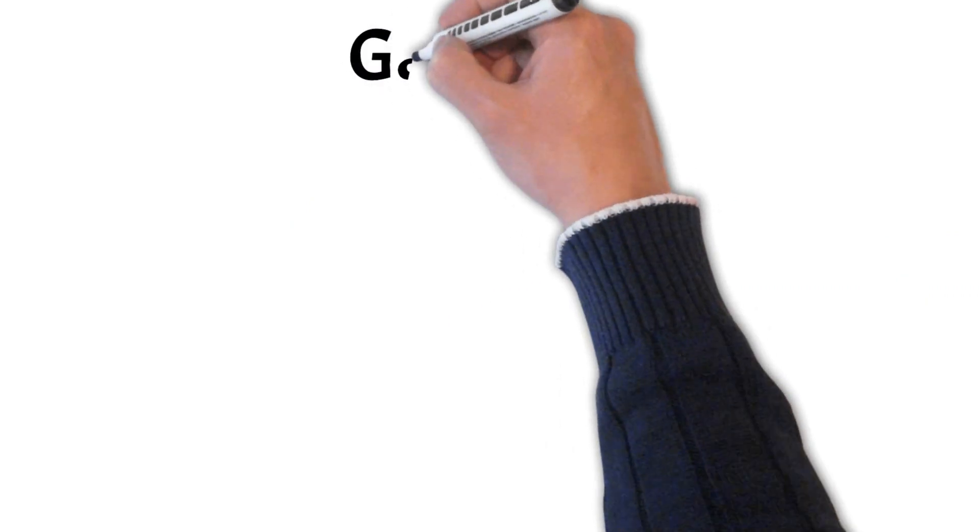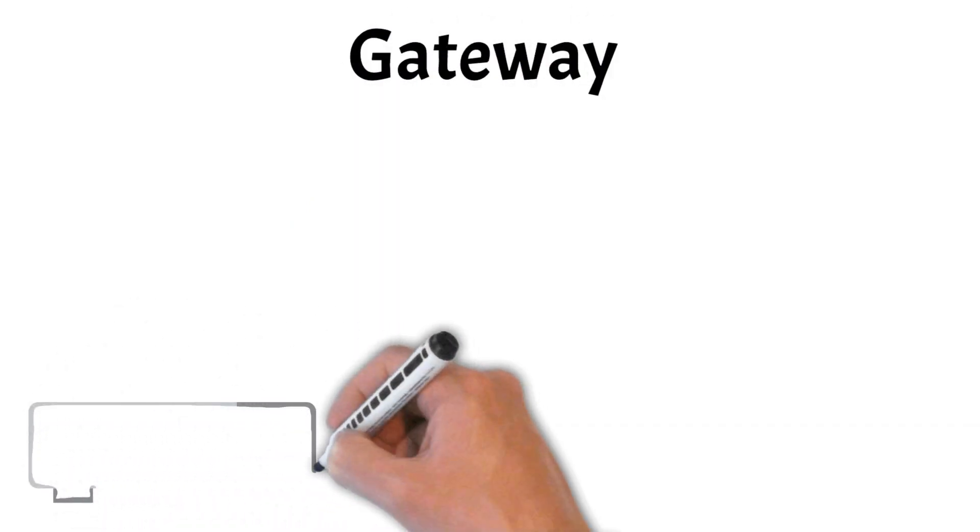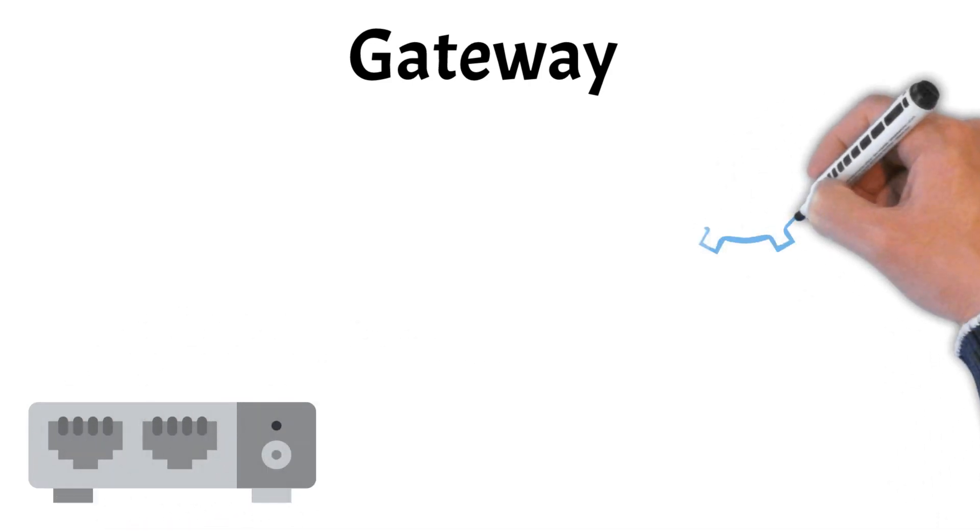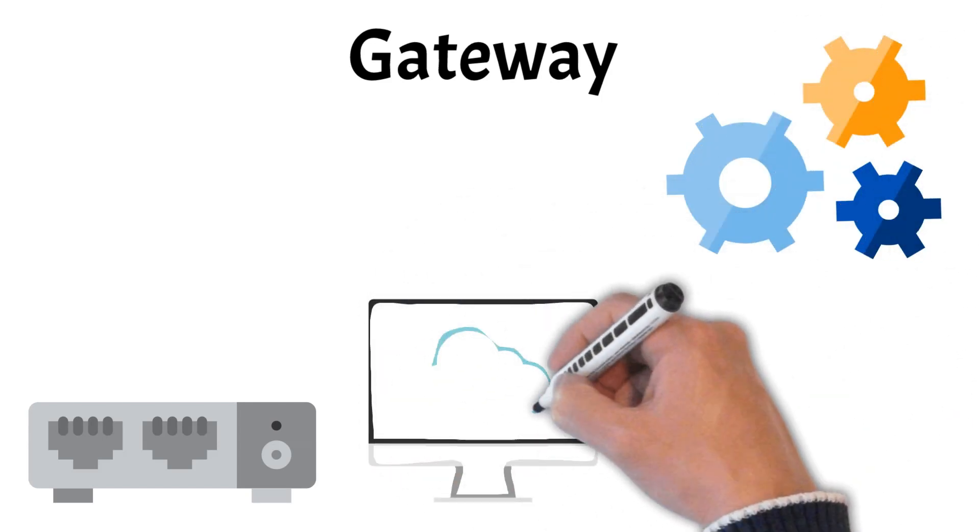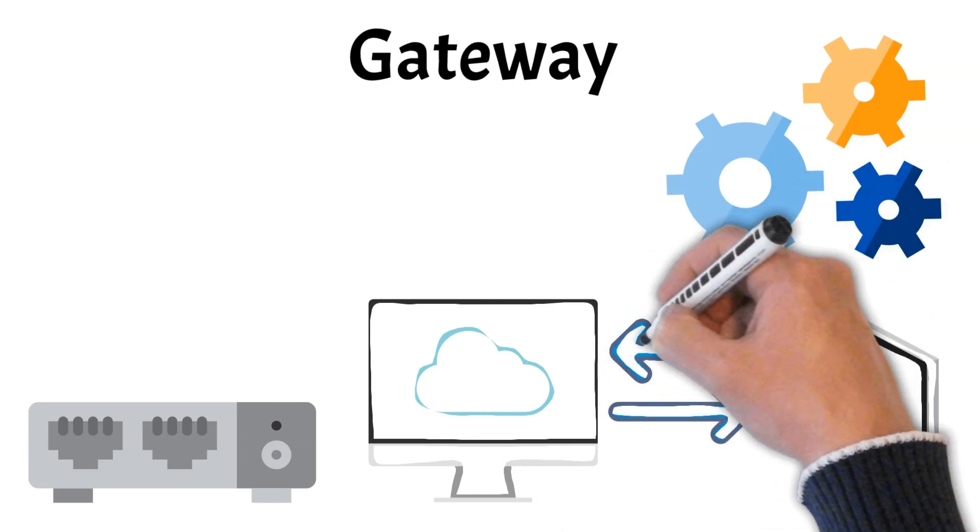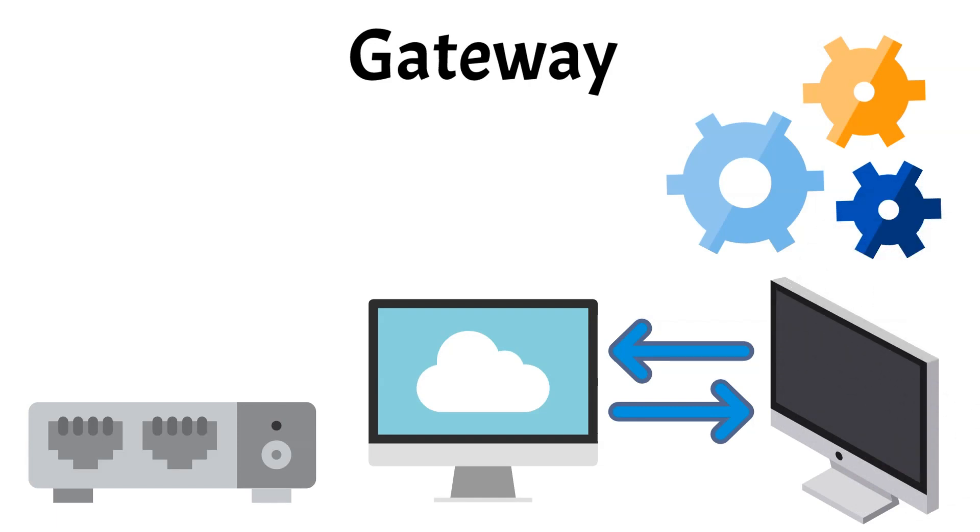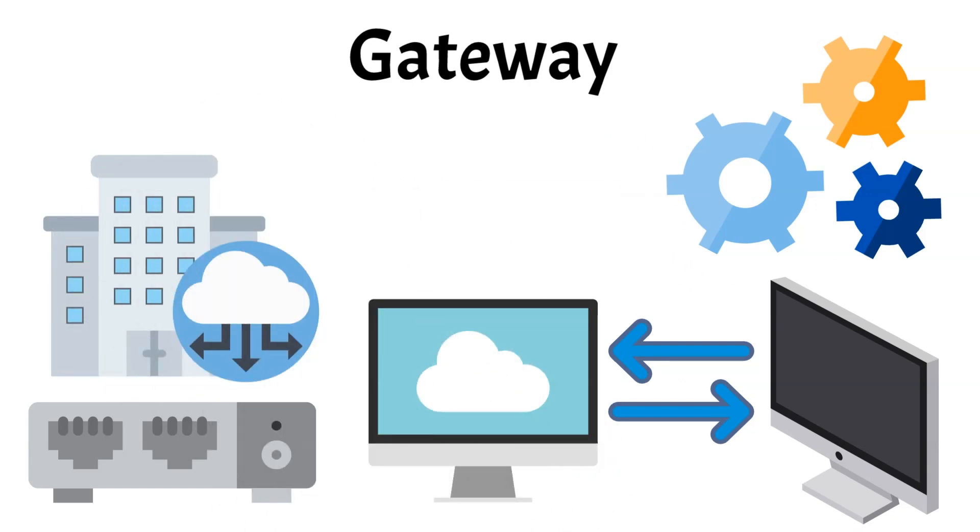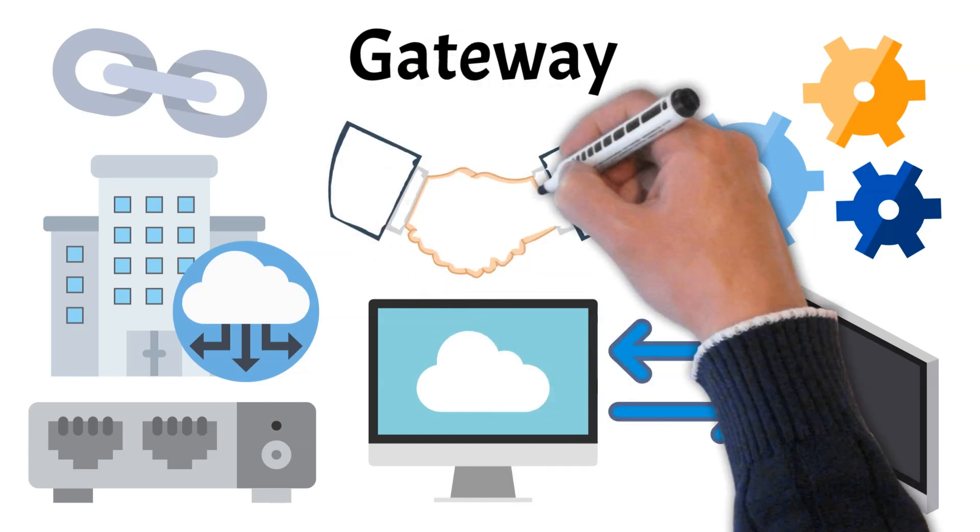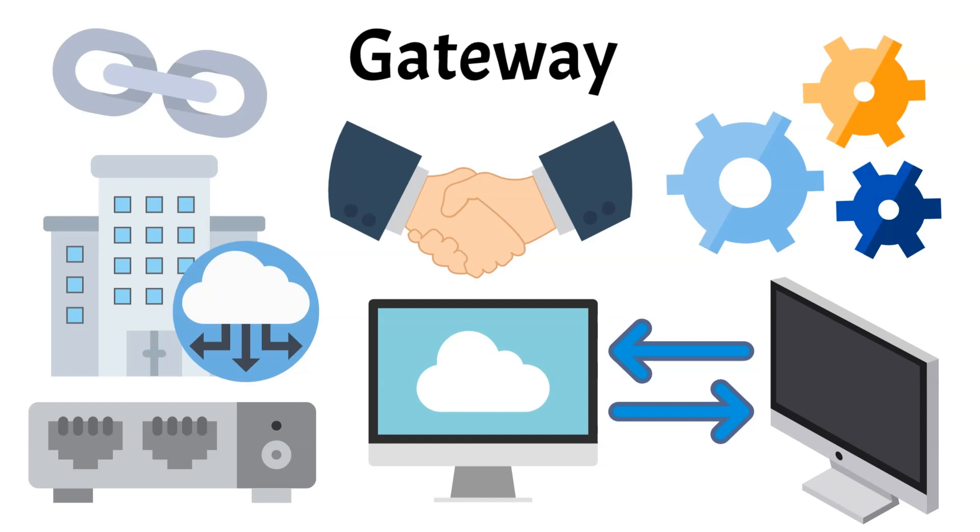The next network device on our list is the gateway. A gateway connects different networks, often with varying protocols, and enables them to communicate seamlessly. It acts as a translator between networks that operate on different systems or standards, converting data into a compatible format so information can pass between them. Gateways are especially important in larger networks, such as those found in organizations, where they connect local networks to external networks like the Internet. Unlike a router, which primarily directs data traffic within or between similar networks, a gateway can link completely different network types. This device helps ensure compatibility and communication across diverse systems, supporting smooth data transfer and resource sharing across a wide range of network environments. For more on network protocols, check out our video linked in the description.